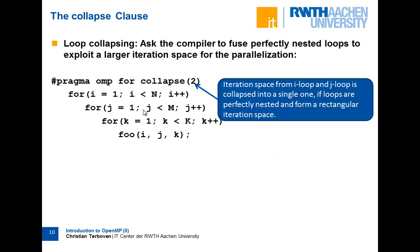If you have perfectly nested loops — meaning loops directly nested inside each other where the inner loop iterations do not depend on the outer loop iterations — there's a clause named 'collapse' in OpenMP. 'collapse(2)' means the two outermost loops are fused together by the compiler so you have a larger iteration space. The larger the parallel iteration space, the better speedup you can expect. You could also say 'collapse(3)' and the compiler would fuse all three loops into a single one, which you could do manually but that results in ugly code and is error-prone.